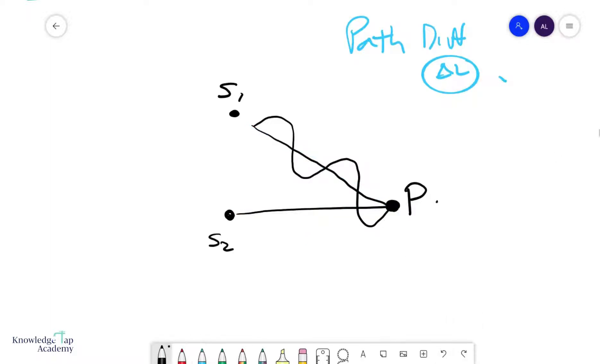Consider a situation where the path difference is zero, means that this length here and this length here is exactly the same, in which case, if the sources were in phase, then the waves would be doing an identical thing by the time we reach P. So a zero path difference means that there is zero phase difference due to that.